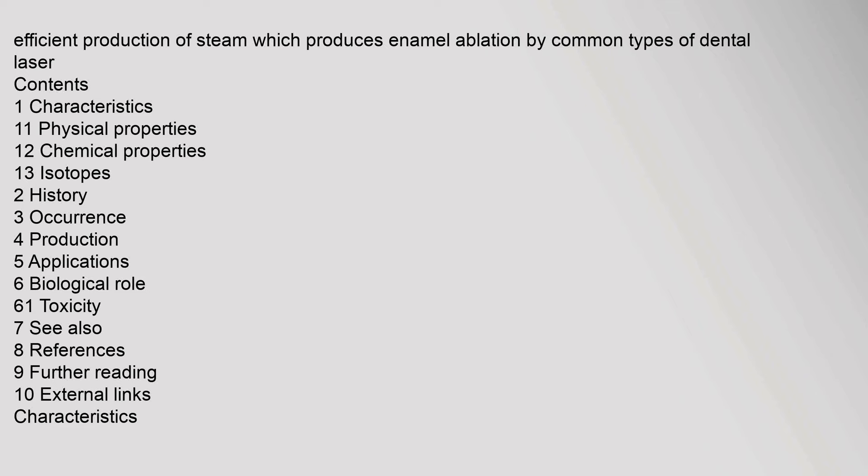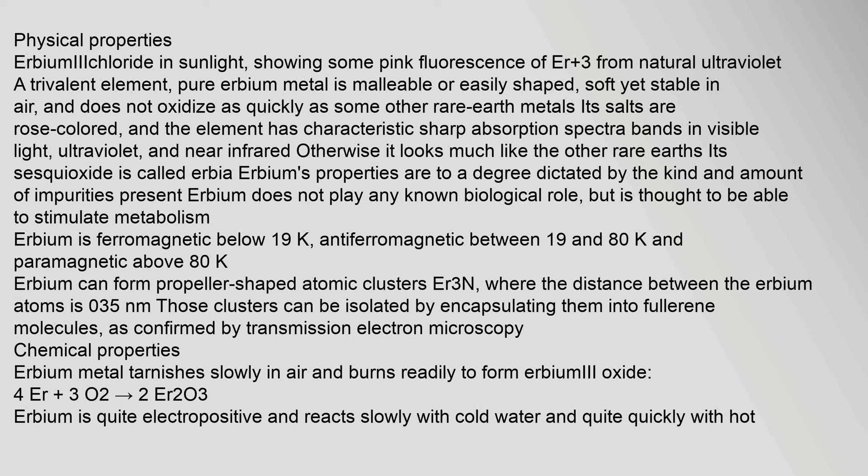Erbium chloride in sunlight shows some pink fluorescence of Er³⁺ from natural ultraviolet. A trivalent element, pure erbium metal is malleable or easily shaped, soft yet stable in air, and does not oxidize as quickly as some other rare earth metals. Its salts are rose-colored, and the element has characteristic sharp absorption spectra bands in visible light, ultraviolet, and near-infrared. Its sesquioxide is called erbia.